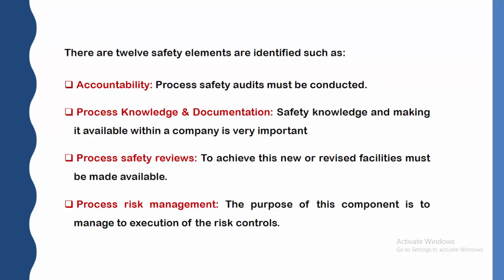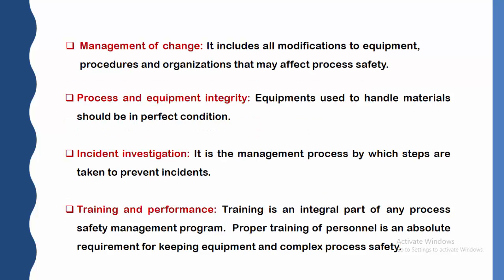Second, process knowledge and documentation. Safety knowledge and making it available within a company is very important, and that can be done through process knowledge and documentation. Third, process safety reviews — new or revised facilities must be available to achieve these reviews. Fourth, process risk management — the purpose of this component is to manage risks through execution of risk controls. Fifth, management of change — this includes all modifications to equipment, procedures, and organization that may affect process safety.